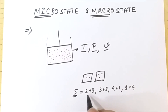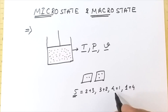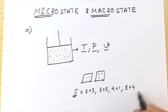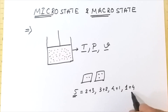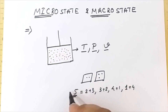Irrespective of the internal arrangement, the outer result remains the same. Whether I get four plus one, three plus two, or two plus three, they all equal five. So this internal arrangement is our microstate, and the sum we are getting — the outer property — is our macrostate.